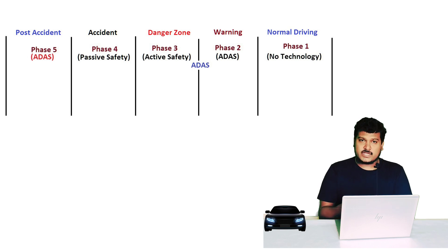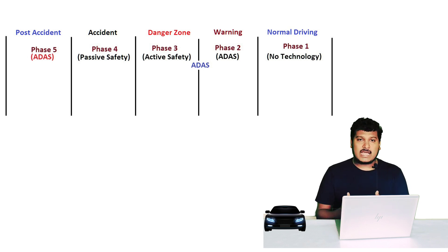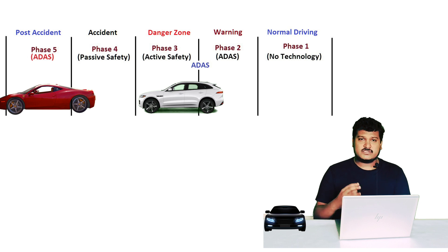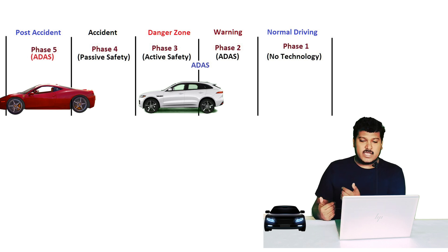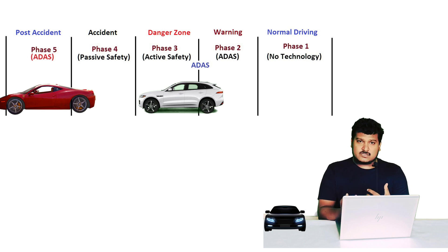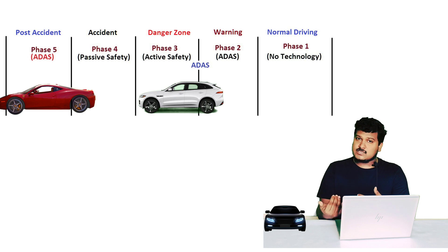Before ACC — Adaptive Cruise Control — the warning makes the driver slow down. If the driver is not ready to slow down, the adaptive cruise controller comes into picture and slows down the vehicle by activating Active Safety. In phase three, ADAS accounts for about 10% and Active Safety accounts for about 90%. Even so, if the driver keeps accelerating, the ACC will cancel and the vehicle will hit the obstacle. That leads to phase four — the accident.